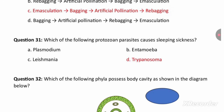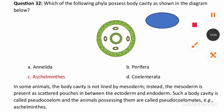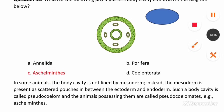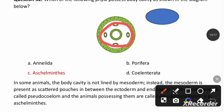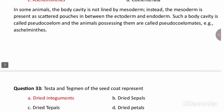Which protozoan parasite causes sleeping sickness? Sleeping sickness is caused by Trypanosoma. Which phylum possesses the body cavity shown in the diagram? This type of body cavity is found in Aschelminthes. In these animals, the body cavity is not lined by mesoderm — mesoderm is present between ectoderm and endoderm. Such a body cavity is called a pseudocoelom, making them pseudocoelomates.